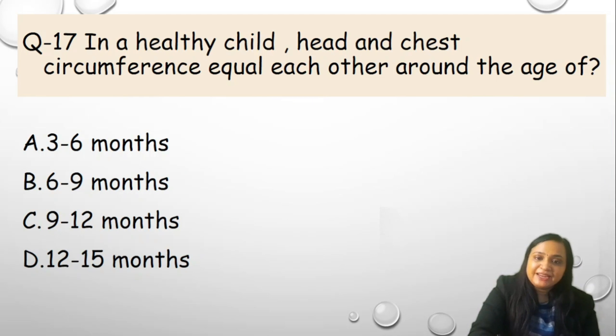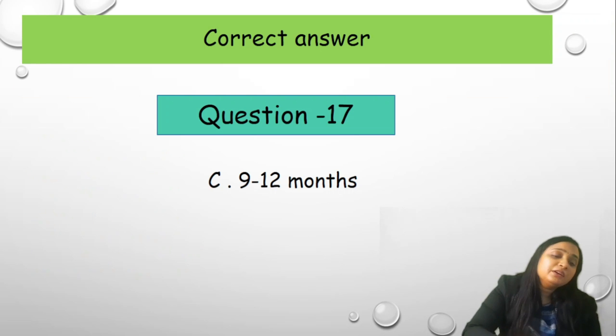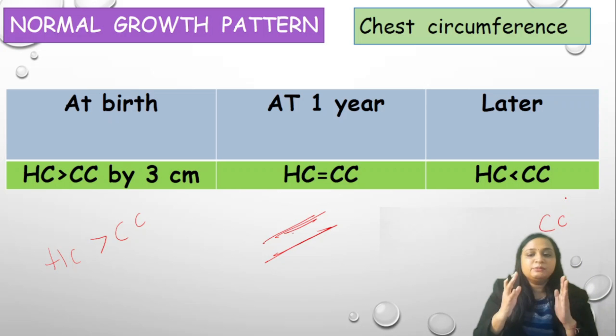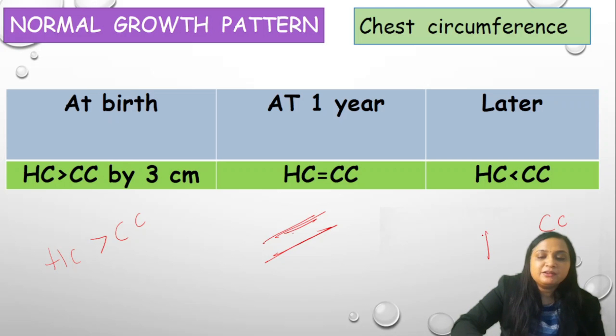Question number 17, in a healthy child, head and chest circumference equals each other at the age of 3 to 6 months, B 6 to 9 months, 9 to 12 months or D 12 to 15 months. It is very easy to remember. The correct answer, we all know it is 9 to 12 months. If you attended series 2, you will be able to answer this question correctly. Remember only 3 things. At birth, HC is bigger than CC. At 1 year, they equal. At 1 year, HC is equal to CC. But after the 1 year, the CC takes over the HC and it will become bigger. It will be same as the adult proportion. Our correct answer is 9 to 12 months.